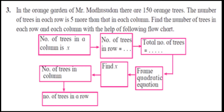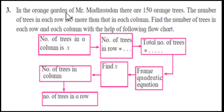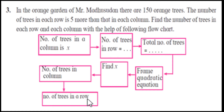Problem 3: In the orange garden of Mr. Madhusudan there are 150 orange trees. The number of trees in each row is five more than that in each column. Find the number of trees in each row and each column using the given flow chart. The flow chart steps are: number of trees in a column is x, number of trees in a row is x plus 5, total trees is 150, frame the equation, find x, then find numbers of trees in column and row.